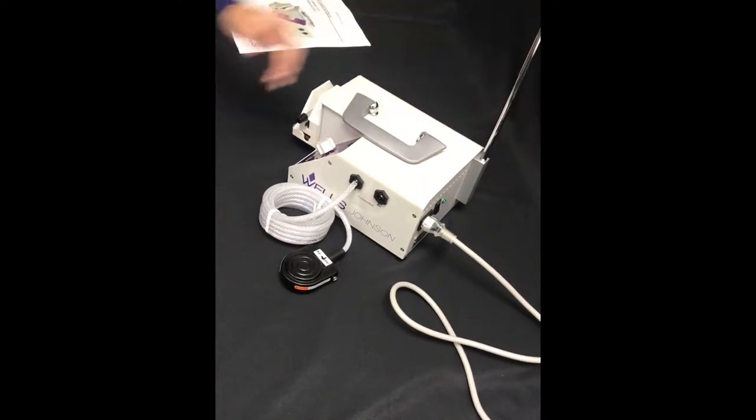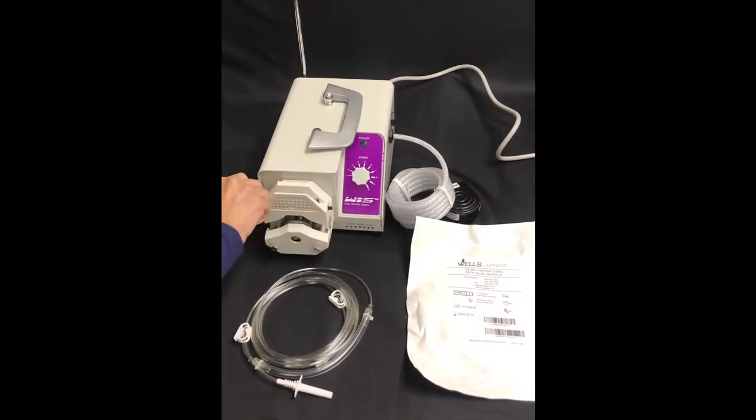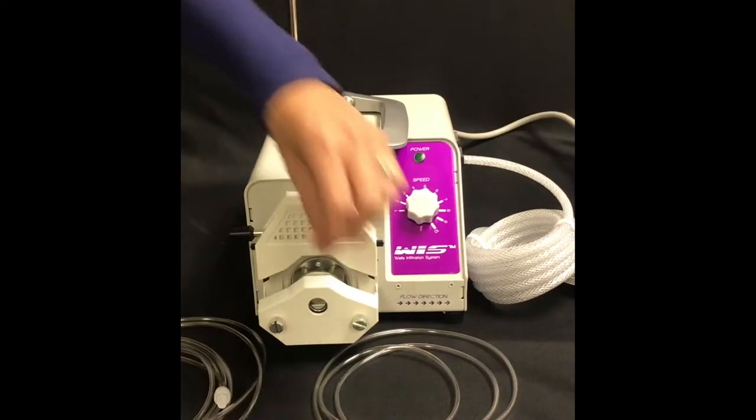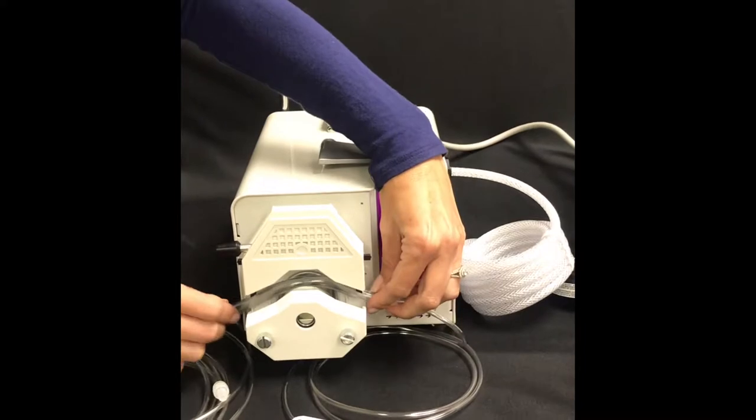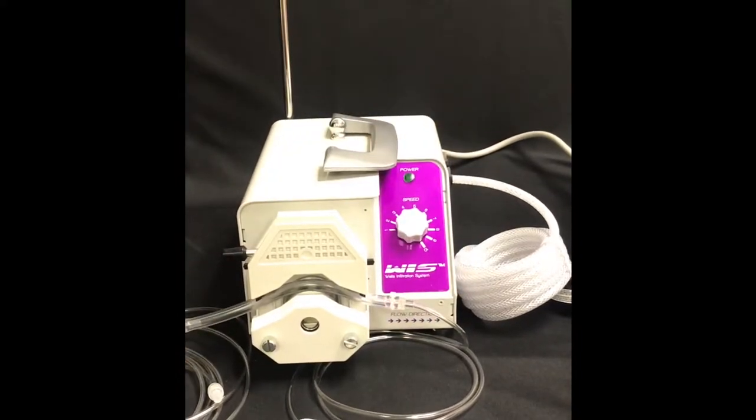Load the sterile infusion tubing by rotating the pump head lever counterclockwise to open the pump head. Insert the enlarged center section of the infusion tubing into the pump head opening over the rollers.